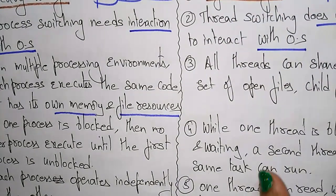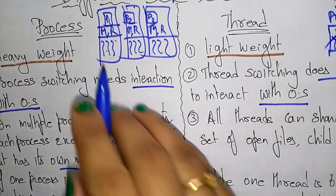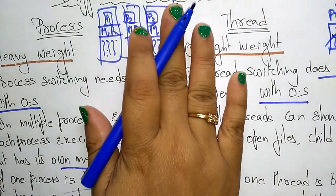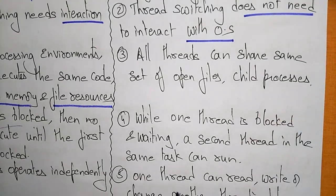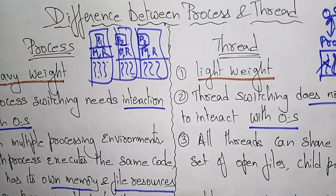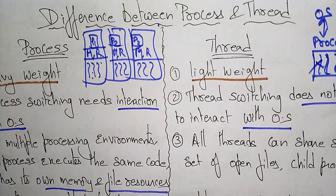That is the difference between process and thread. A process is just an application that is going to be executed. Within an application, you have different tasks that have to be executed — those tasks you call threads. It is simply a lightweight process. Thank you.